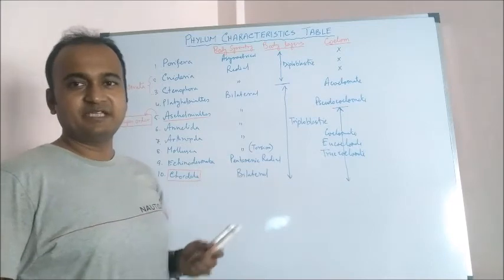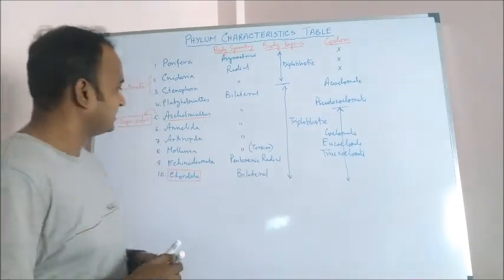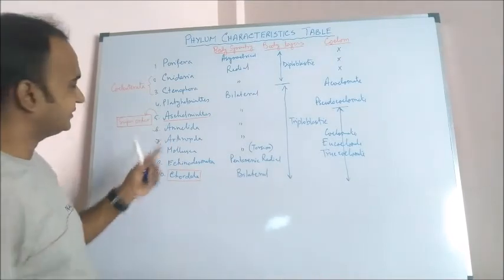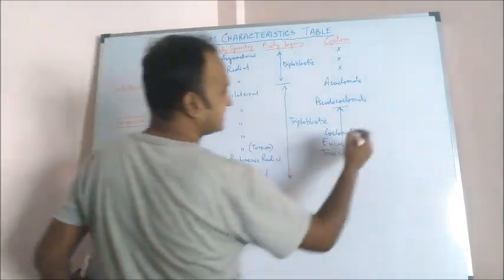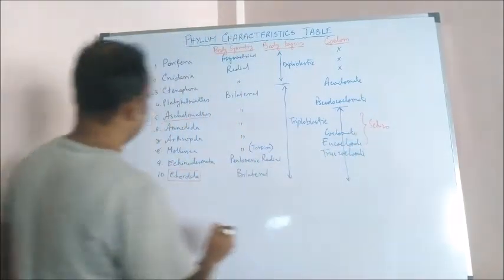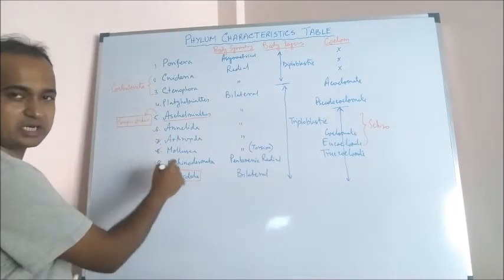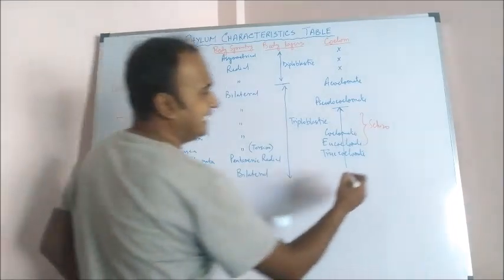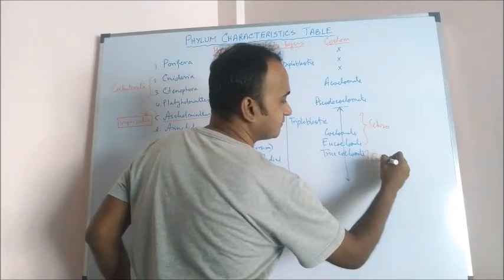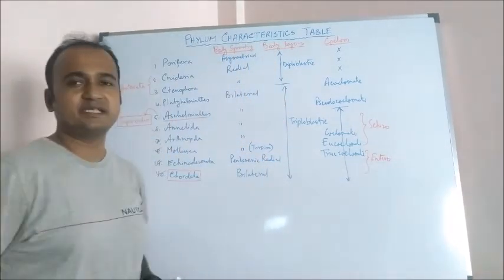True coelomate animals can be divided into two types. Annelida, Arthropoda, and Mollusca, these three are called schizocoelomate. And Echinodermata and Chordata, these two are called enterocoelomate.